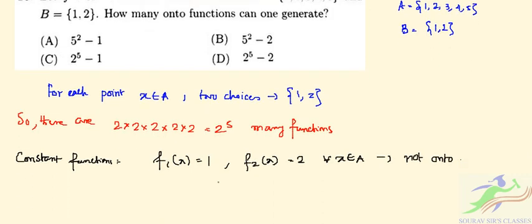So we will have 2 to the power of 5 minus 2, this many onto functions one can generate.